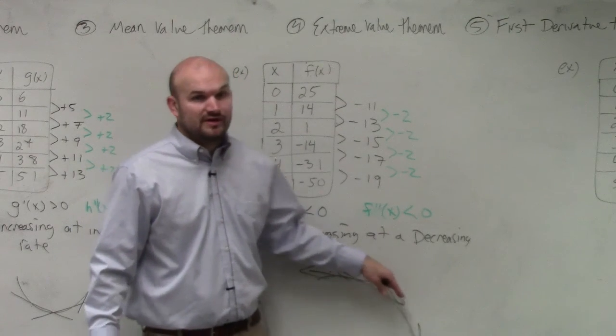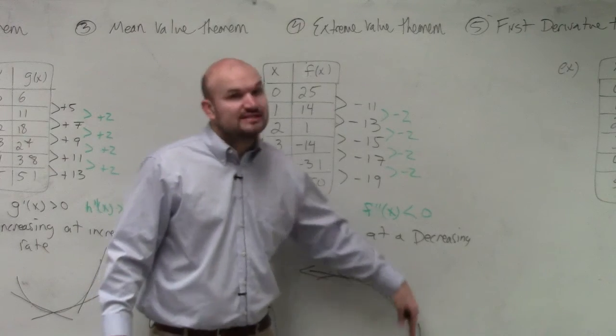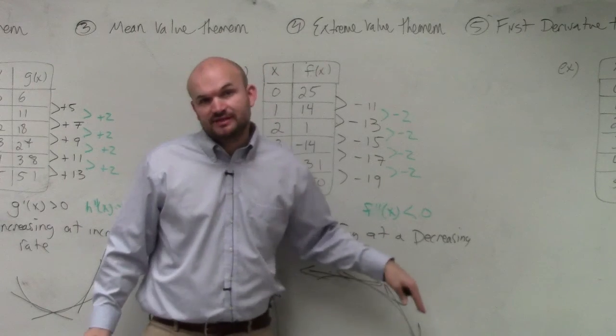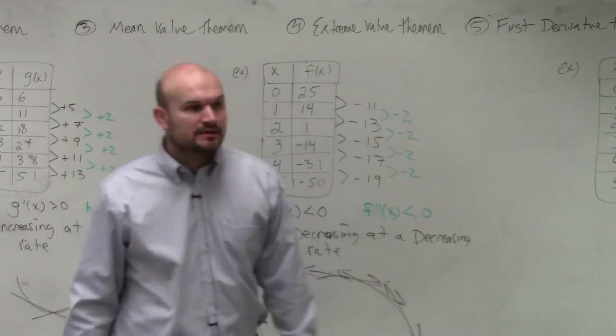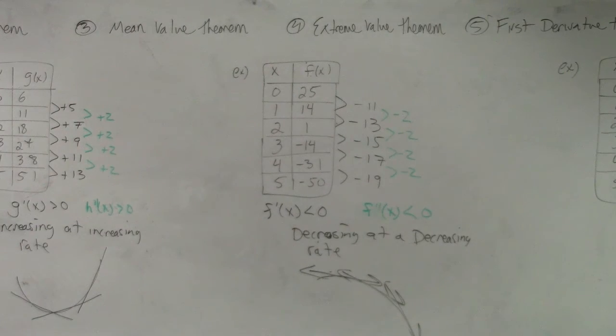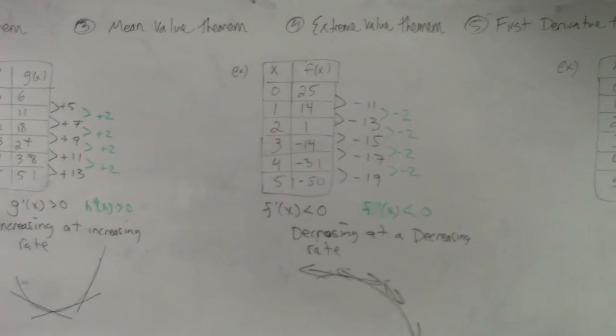Negative, and they're getting more and more negative, right? So it's decreasing at a decreasing rate, because more and more negative is decreasing, right? When you have negative 5, negative 20, negative 30, that's getting smaller and smaller technically, right?